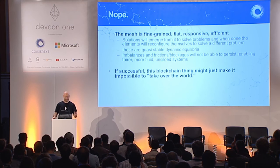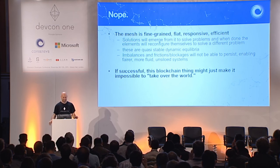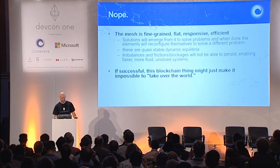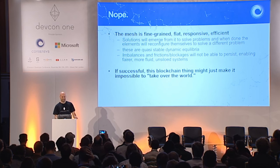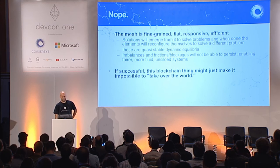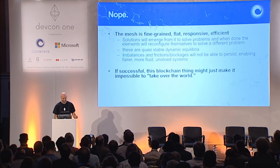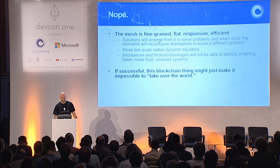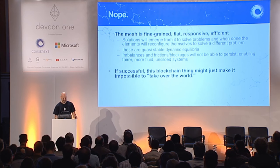The mesh is fine-grained, flat, responsive, and efficient. Solutions will emerge from it to solve problems, and when done, the elements will reconfigure themselves and solve a different problem. These are quasi-stable dynamic equilibria. Imbalances and frictions or blockages will not be able to persist, enabling fairer, more fluid, unsiloed systems.